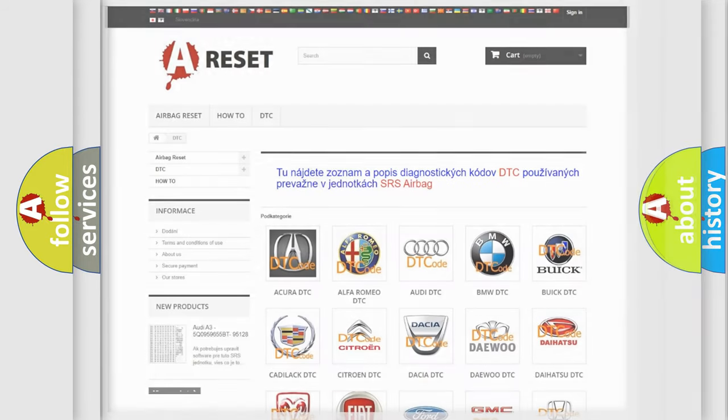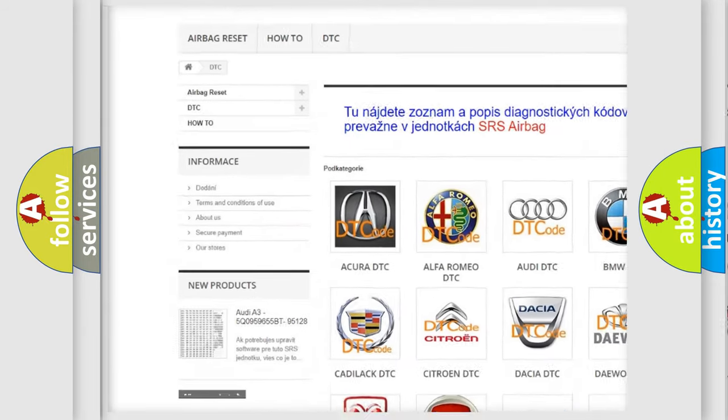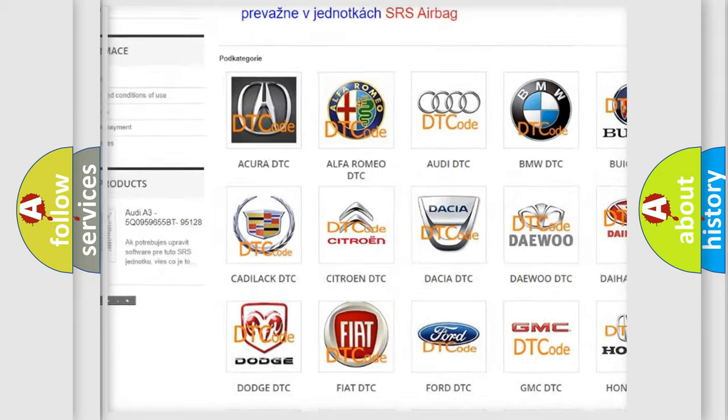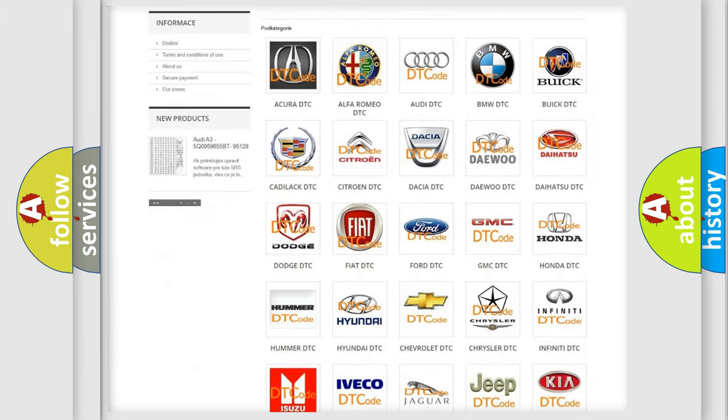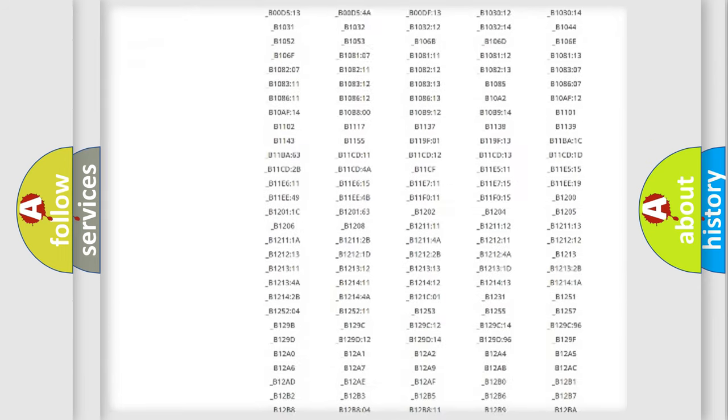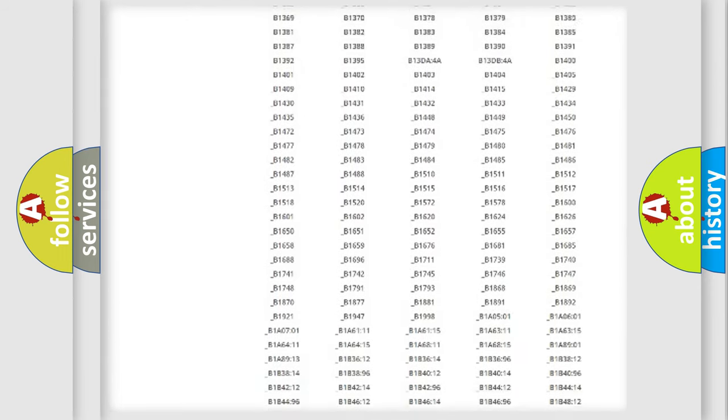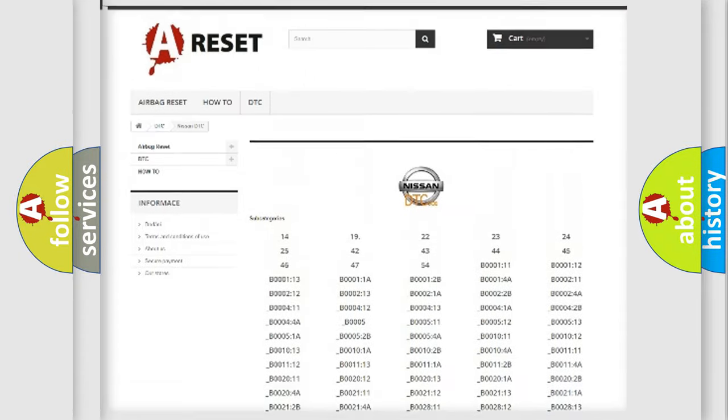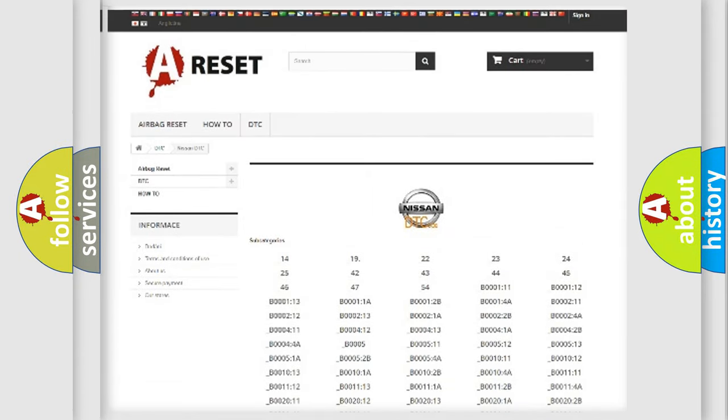Our website airbagreset.sk produces useful videos for you. You do not have to go through the OBD2 protocol anymore to know how to troubleshoot any car breakdown. You will find all the diagnostic codes that can be diagnosed in Nissan vehicles, also many other useful things.